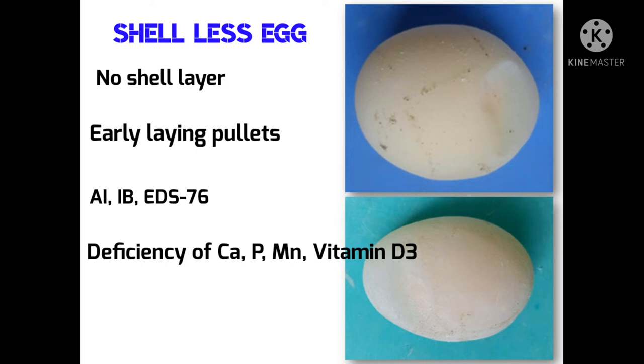The incidence of these eggs varies from 0.5 to 6 percent and they are commonly produced by pullets coming into lay, particularly by birds that have matured early, and in older birds, especially those which are nearing the end of the laying period.